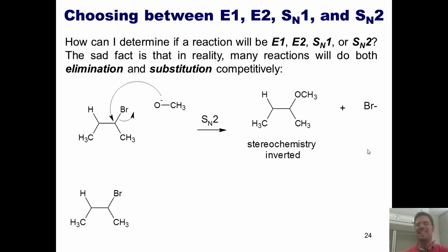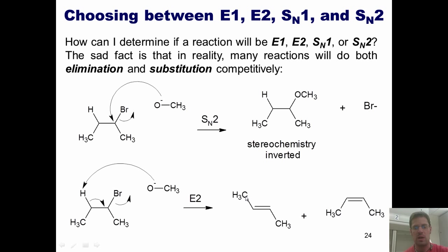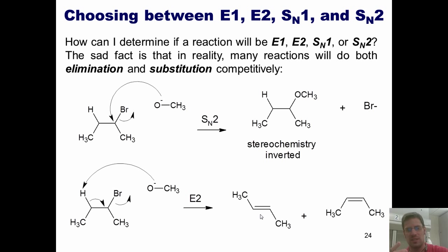In contrast, you could take the exact same molecule and imagine the methoxide, rather than forming a bond with the carbon stuck to the leaving group, instead grabbing the hydrogen on the carbon next door, pumping those electrons down to form a double bond, and kicking off the bromide. This gives potentially two products: the trans (E) product and the cis (Z) product. The trans would be more favorable in this scenario. This would be an E2 reaction.